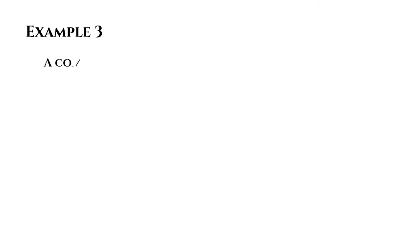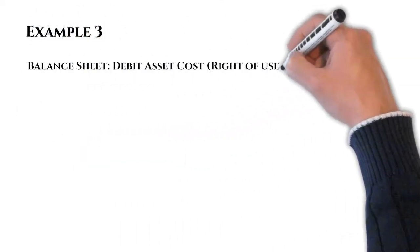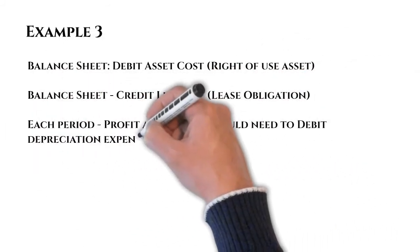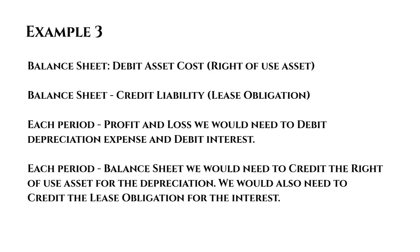Let's have a look at example three. A company has identified a finance lease through the right to use a finance vehicle under a contract with an external hire purchase company. For the original entries, we're going to recognise an asset and a liability under lease obligations: debit right-of-use asset, credit the lease liability — both at present value. Each period, we post depreciation as a debit to the profit and loss account and a credit to accumulated depreciation on the right-of-use asset. For interest on the lease, we debit interest charged to the profit and loss account and credit the lease liability on the balance sheet.